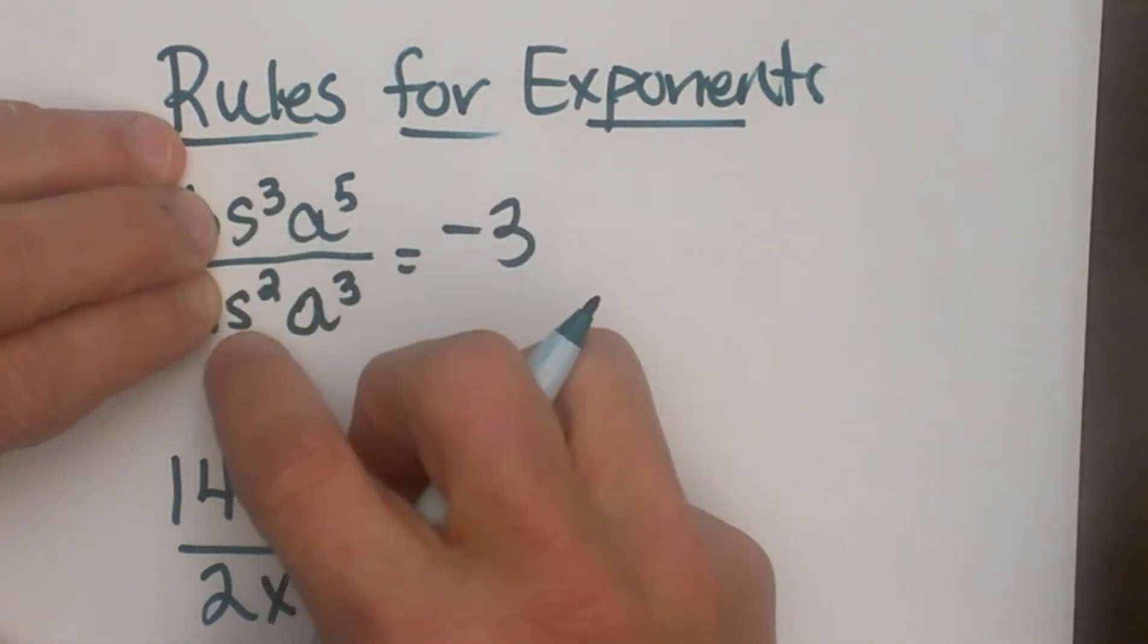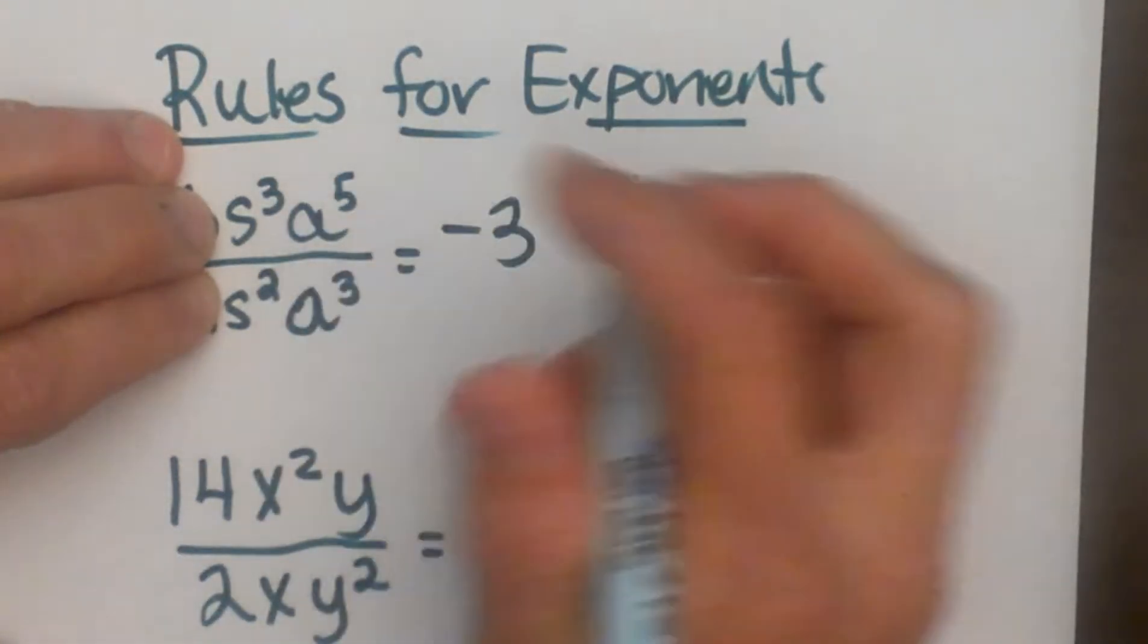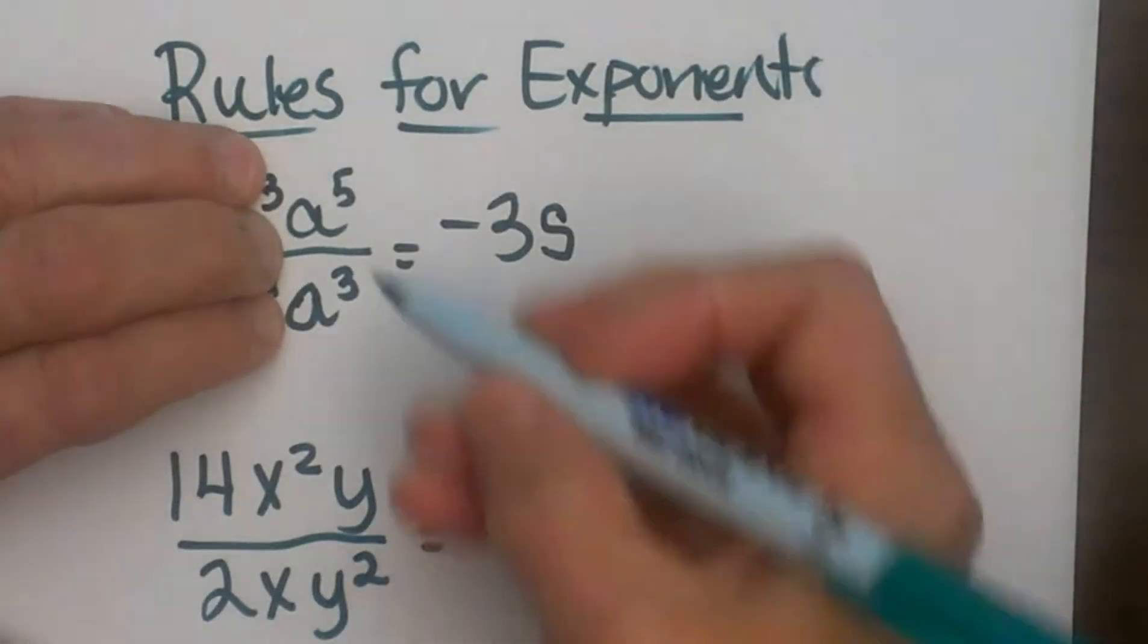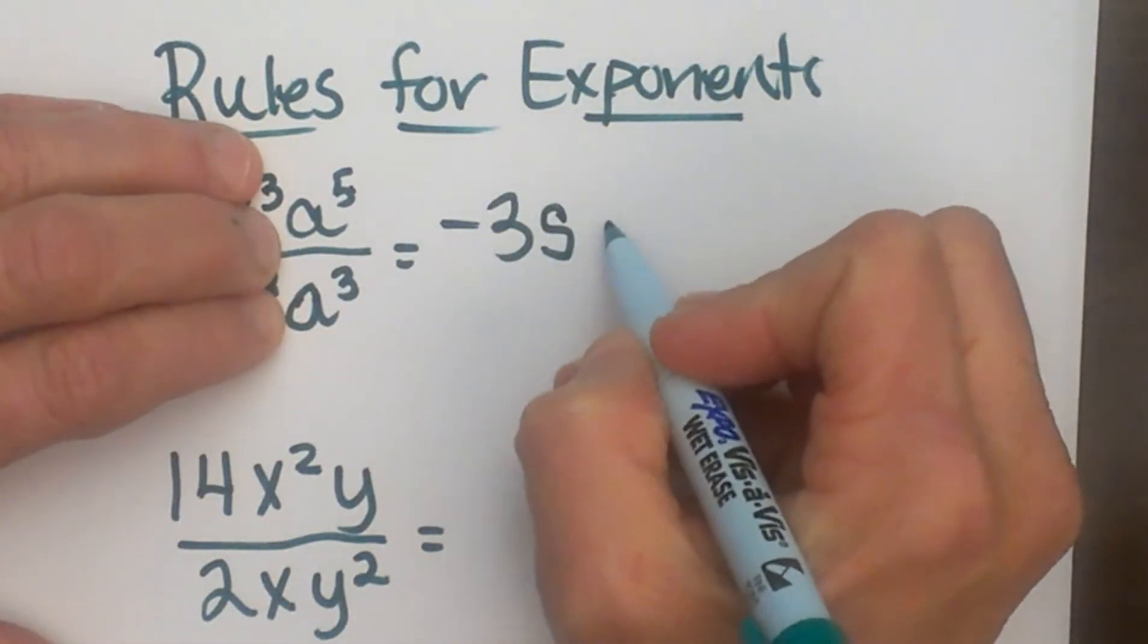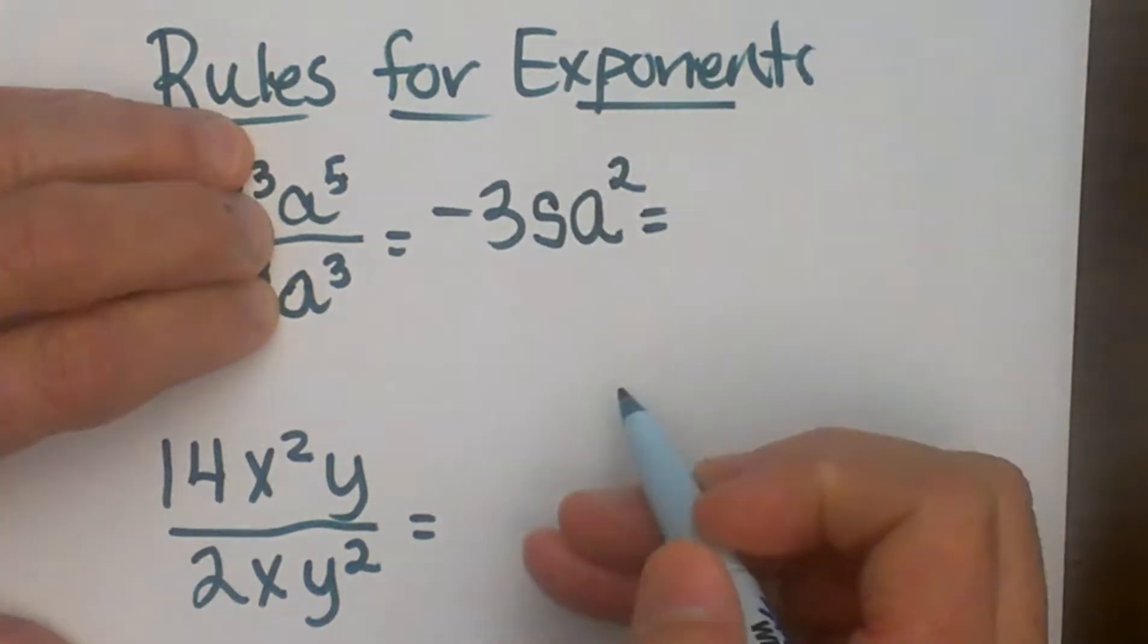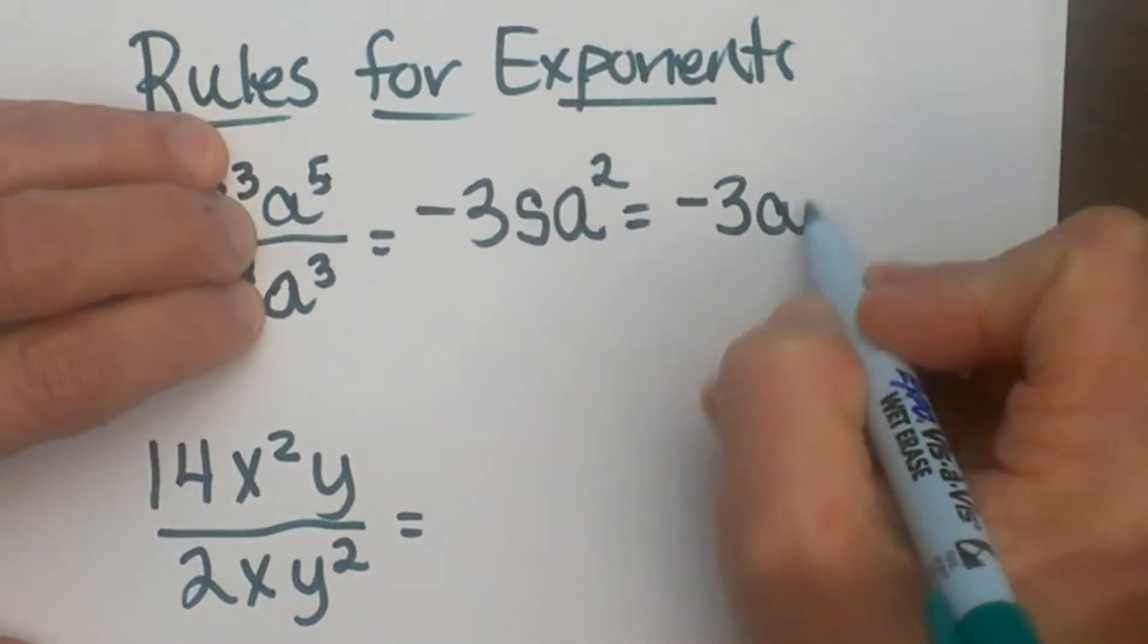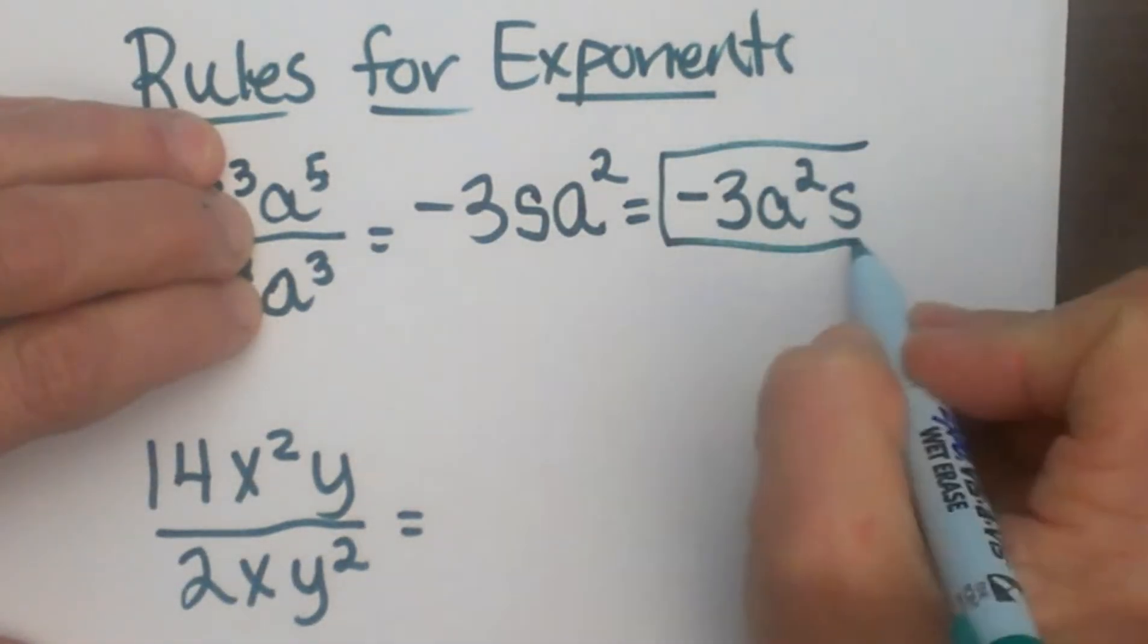We have s cubed divided by s squared. We know that we just subtract the exponents. So 3 minus 2 is 1, so that is just s to the first. And then a to the fifth divided by a to the third. I am going to subtract my exponents and I am going to get a squared. Now typically we write our variables in alphabetical order, so I am going to switch the order and get negative 3a squared times s, and that would be my final answer.